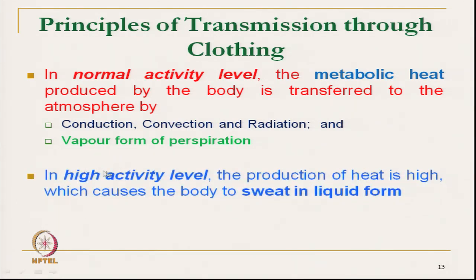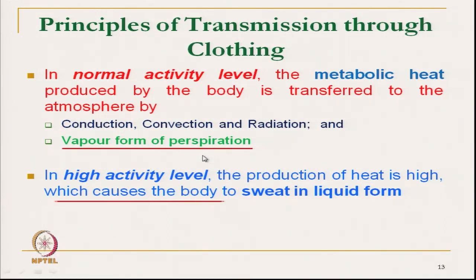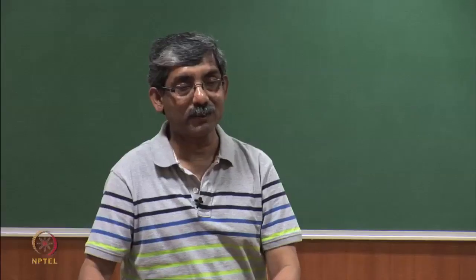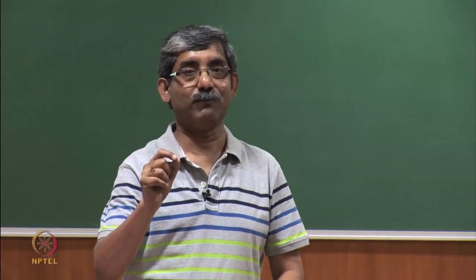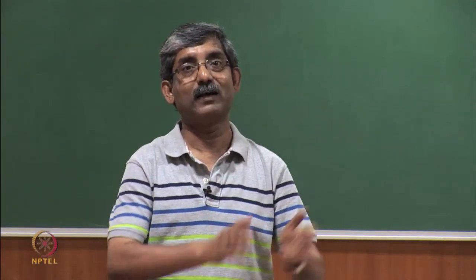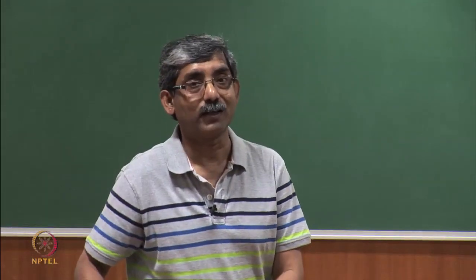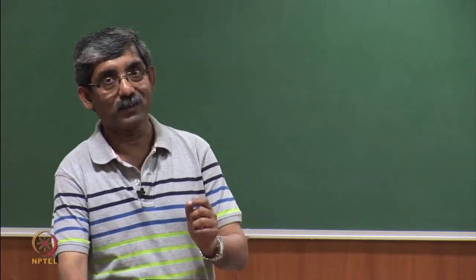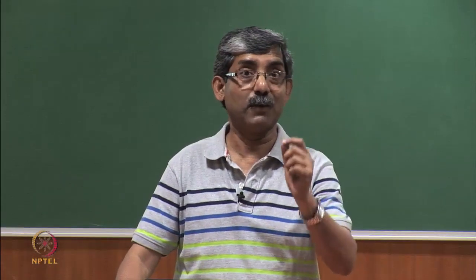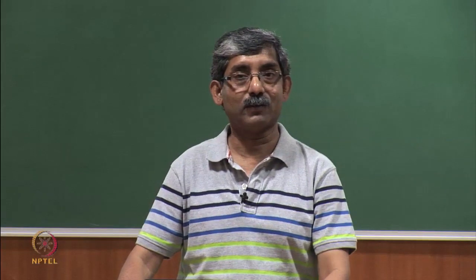But in high activity level, we will start sweating and sweat comes in the liquid form. At high activity level, the total phenomena of moisture transmission changes — it changes from vapour form to liquid form. The same fabric has to act in sweat form. Depending on our activity level, we must know the type of sweating. If we know the type of sweating and rate of sweating, then we can design our clothing. Clothing for high activity level will be entirely different from clothing for normal activity level. For normal activity level, we have to take care of vapour transmission, and for high activity level, we have to take care of the liquid form.